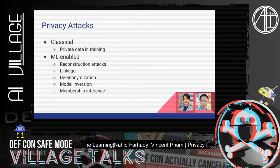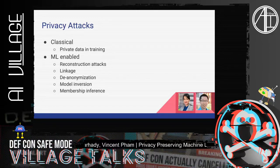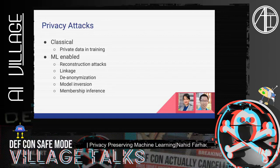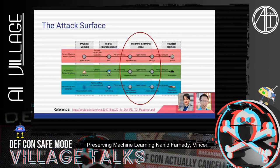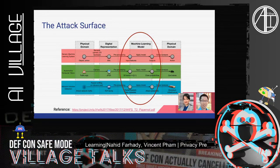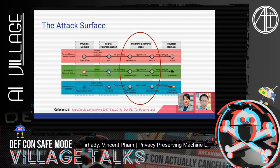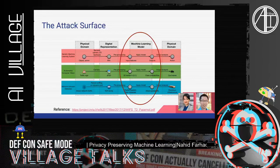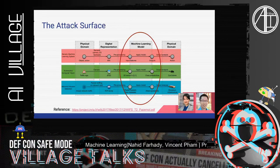My colleague will be talking about privacy attacks next. In terms of privacy attacks, there are two main categories: the classical, where the private data is in the training or raw set, and the ML-enabled ones, which we'll focus on more. There are several attack surfaces that attackers can utilize. The first is the physical domain, such as network traffic. Then there's the digital representation, which is the TCP dump. There's also the machine learning model itself, where you have an input and make a prediction on the output. For this talk, we'll focus on the machine learning model.